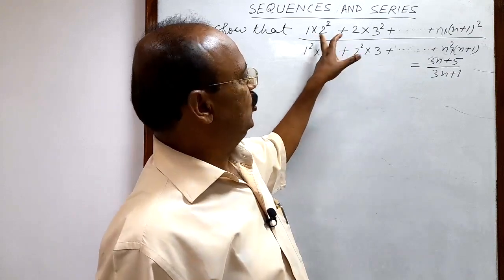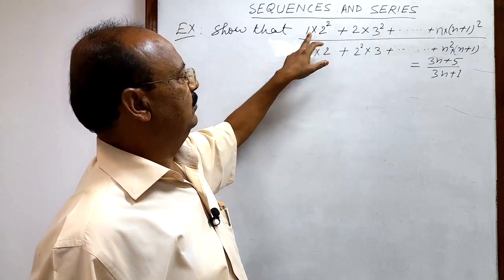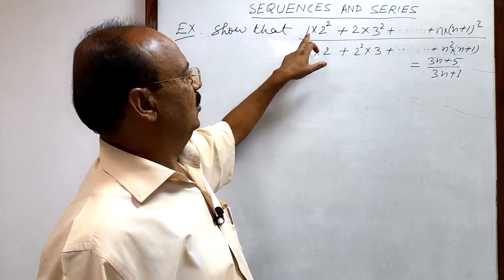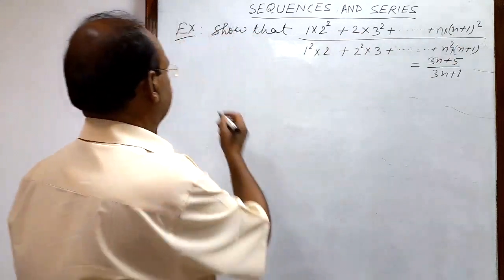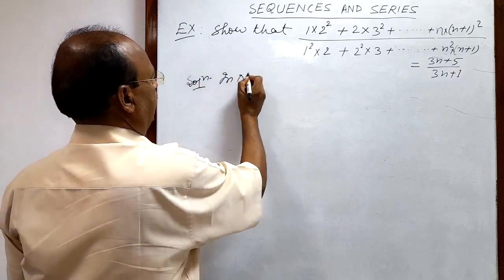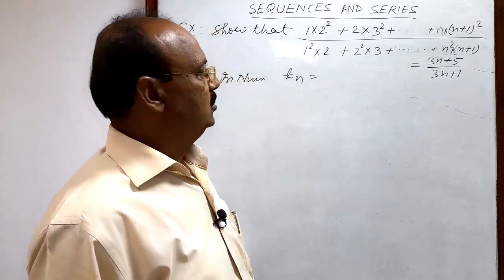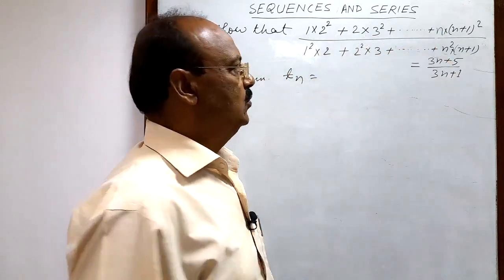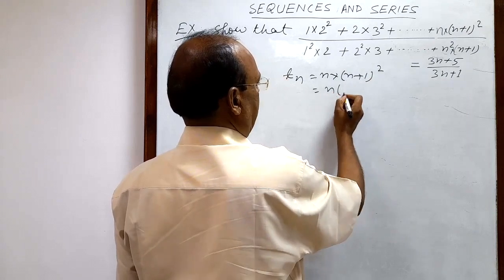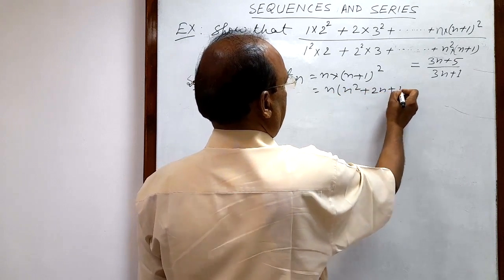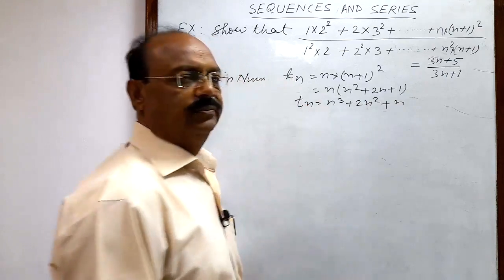We will handle the numerator and denominator separately. In the numerator, the first term is 1·2², so the nth term is n·(n+1)², which expands to n·(n² + 2n + 1) = n³ + 2n² + n. This is the value of Tₙ.